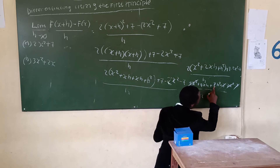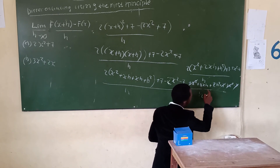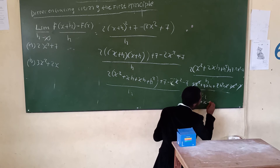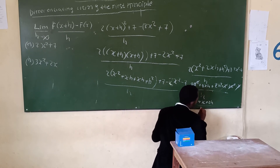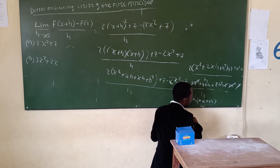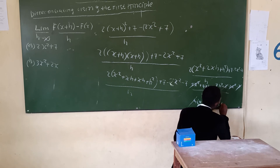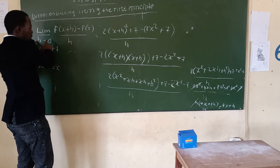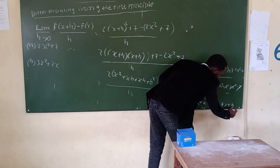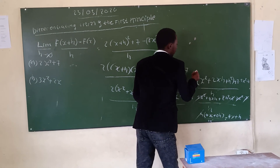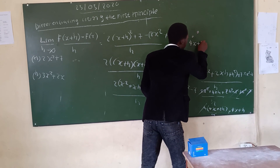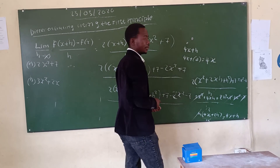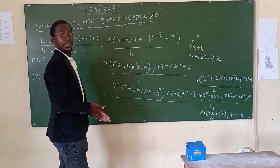We factor out h from the numerator to get h(4x plus 2h) divided by h. The h's cancel, leaving 4x plus 2h. Since h approaches 0, we substitute h equals 0, so our final answer is 4x.